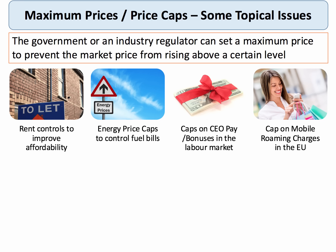Maximum prices have been in the news in recent times, with lots of topical examples. Some economists and politicians are arguing we should introduce rent controls in the housing market to improve affordability. There's been a debate about whether there should be an energy price cap to keep fuel bills under control, and whether to cap the pay of chief executives and bonuses in financial markets. The European Union has introduced a cap on roaming charges, with those caps coming down and roaming charges set to be abolished from 2017.